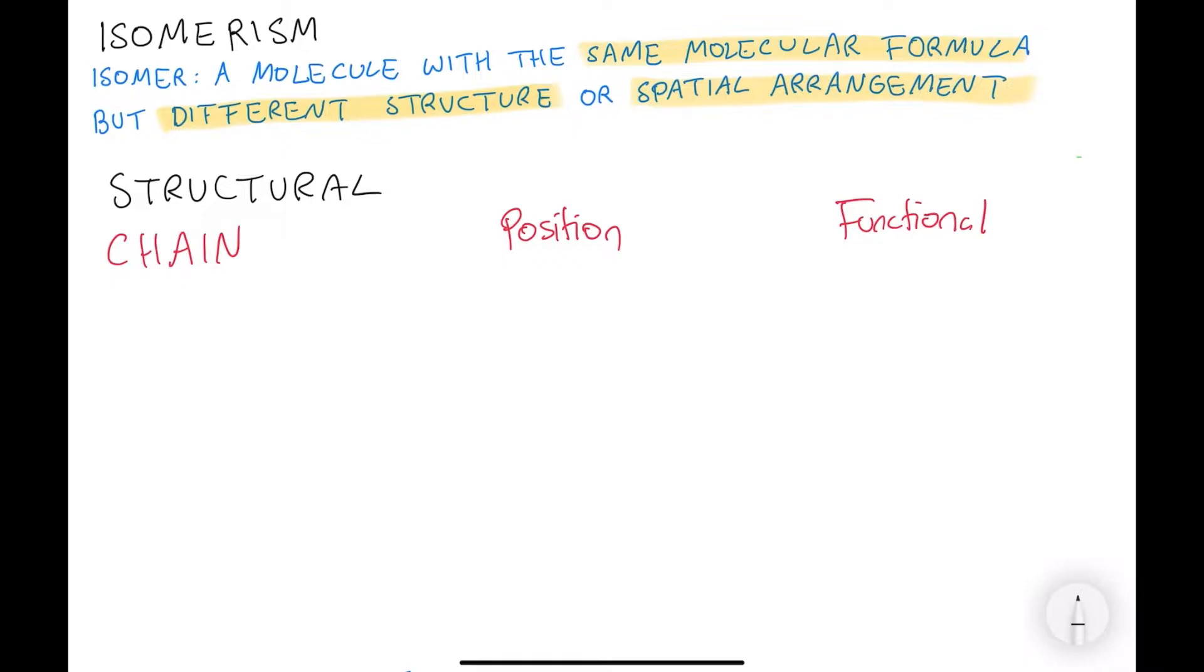The first type is chain structural isomerism or carbon skeletal structure changes. Either it could become a continuous chain like pentane or this continuous chain becomes more branched. For example, you can have two-methylbutane and they both have the structural formula C5H12.